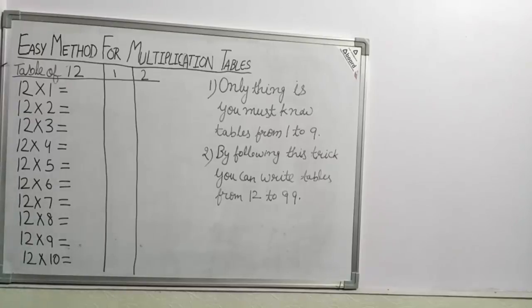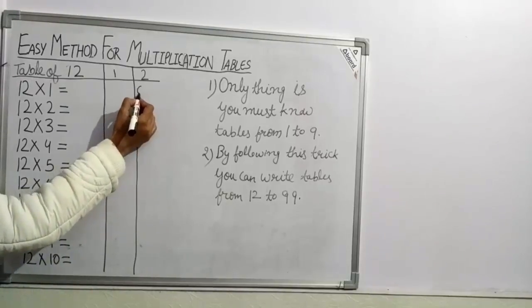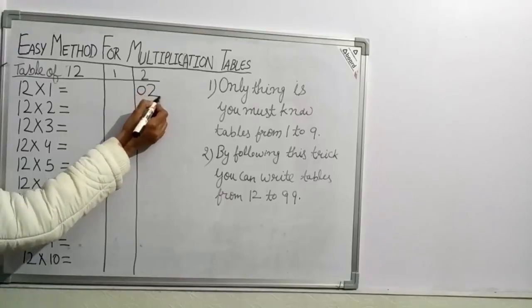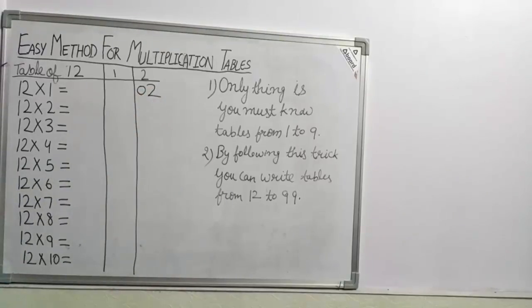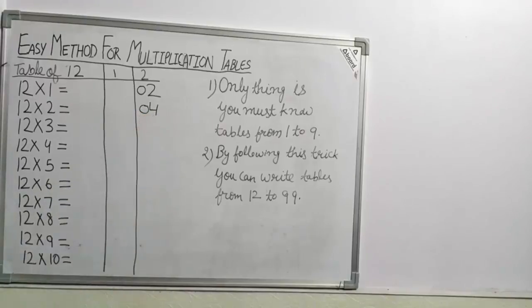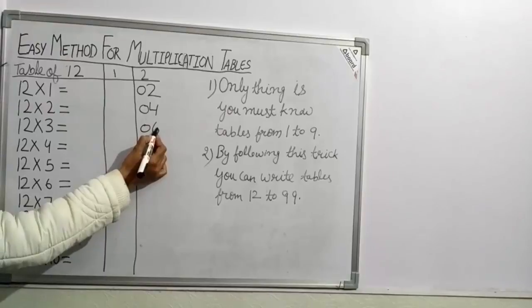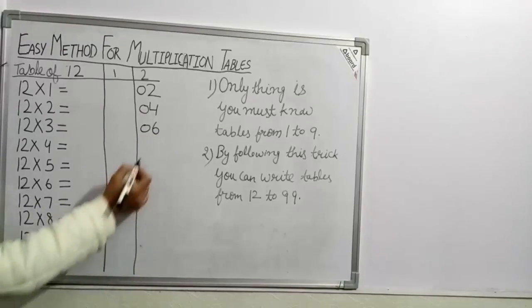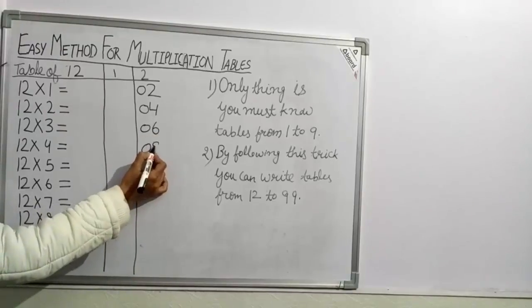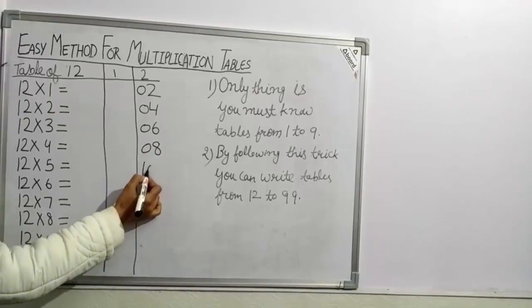For this we have to write first table of 2 and then table of 1. 2×1 = 2, we will write 0 2. 2×2 = 4, 0 4. 2×3 = 6, 0 6. 2×4 = 8, 0 8. 2×5 = 10.